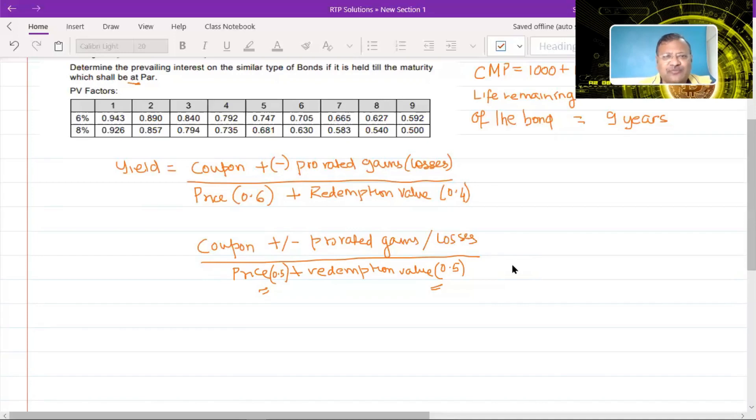Now whether to use 0.6 or 0.4 is up to you, but my suggestion would be use 0.6 and 0.4 and maybe at the bottom you can give a note saying that alternatively we could have used 0.5 and 0.5 as the weightage, but using 0.6 and 0.4 gives us a more accurate picture of the yield. That's a note which you can give. So I'll be going by this formula. So let's just delete this out.